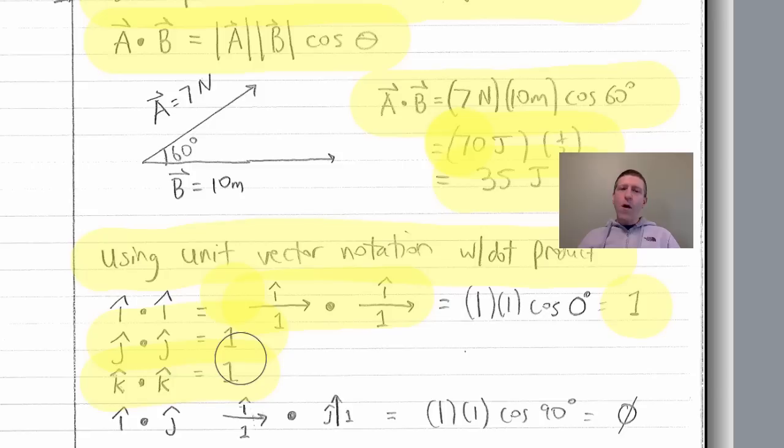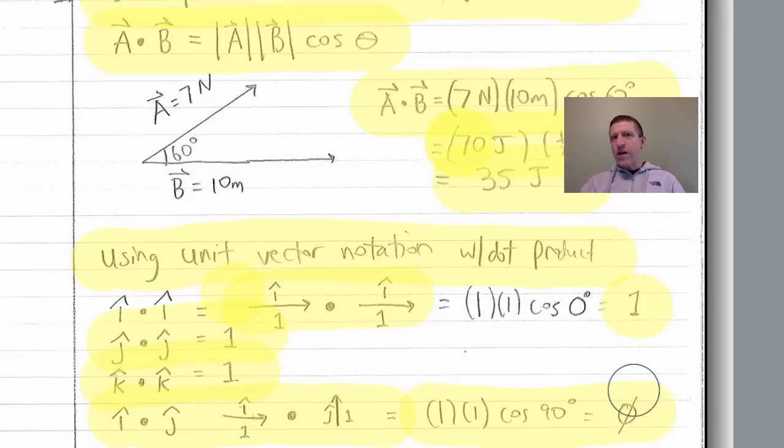However, i, a vector of magnitude 1 in the horizontal direction, dotted on j, a vector of magnitude 1 in the vertical direction, gives us 1 times 1 times the cosine of 90 degrees, which gives us 0. So, when you dot perpendicular vectors on each other, the magnitude, and notice that it only is a magnitude, this has no direction, it's just a scalar. That's why this is called the scalar product also. The magnitude is just 0 when you dot two perpendicular vectors on each other.